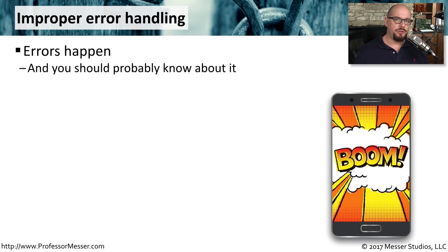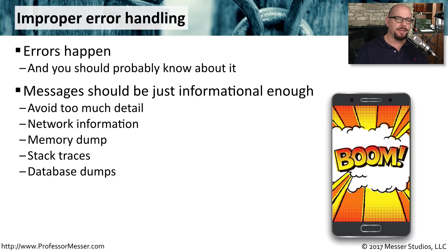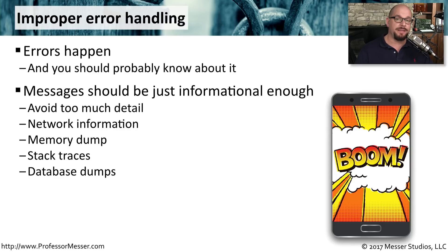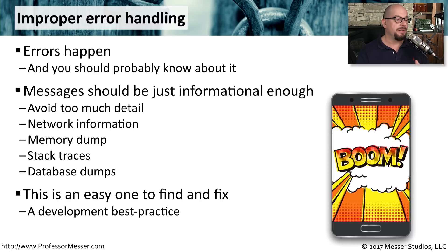With any operating system or application, there will be errors, and there will be error messages that appear on the screen to give you information about where the problem is occurring. We want to be sure that these error messages provide just the right amount of information, and not too much detail that could be used for malicious purposes. You don't want to provide a lot of network details or memory information. You certainly don't want to provide stack traces or details about the database. You want all of the information to be just detailed enough so that application developers can resolve these error messages — and it really starts and ends with the developers to make sure error messages provide the right amount of detail.